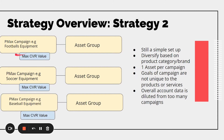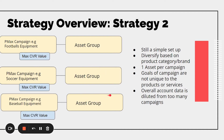Strategy number two is when you have campaigns specific to a certain product category — for example, football equipment would have its own campaign with a single asset group. This is still a simple setup and you're diversifying based on product category or brands. There's one asset group per campaign so you have an idea of what's working. However, the goals aren't unique to the different products within categories. You're also diluting your account data by having so many different Performance Max campaigns. You really want a handful of campaigns with a bunch of asset groups — you can have at least a hundred — rather than one for every single category.